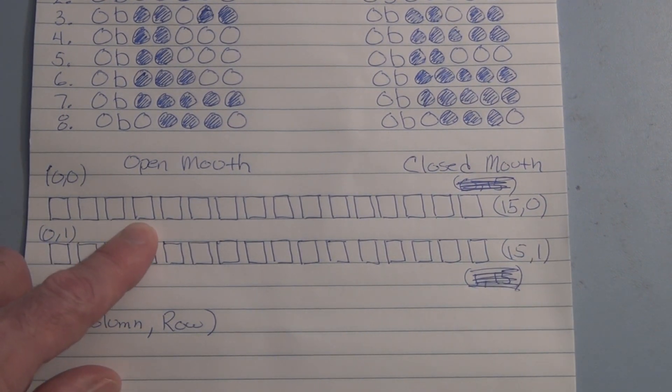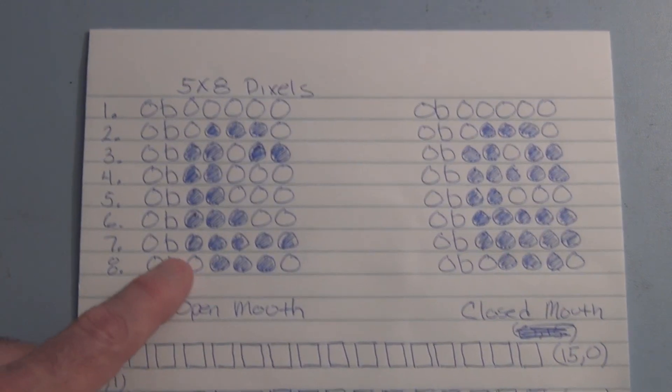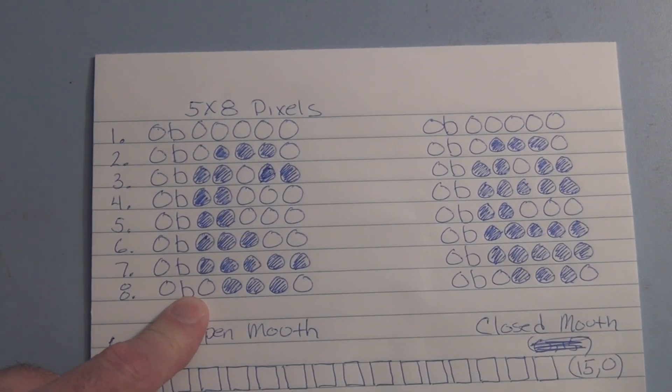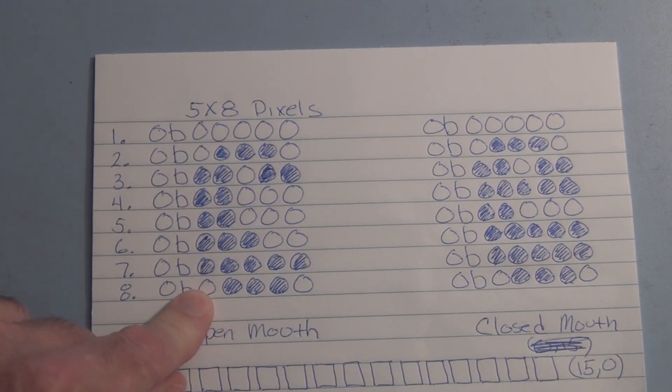So in any one of these squares we can create or display a custom character that can be five by eight pixels. If we were to blow up one of these squares it would look something like this. So we'd have five by eight pixels.